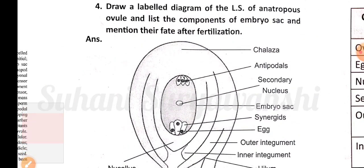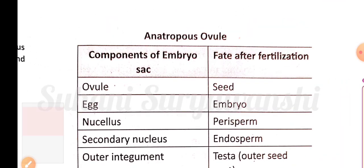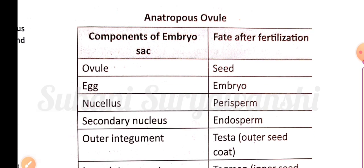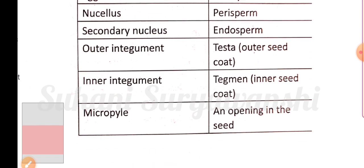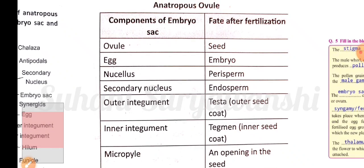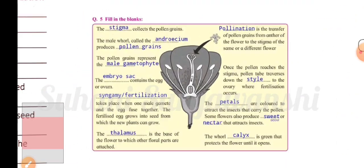Question four: draw a labeled diagram of the lateral side of an anatropous ovule and list the components of the embryo sac, mentioning their fate after fertilization. After fertilization: the ovule becomes a seed, the egg becomes the embryo, the nucellus becomes the perisperm, the secondary nucleus becomes the endosperm, the outer integument becomes the testa, the inner integument becomes the tegmen, and the micropyle becomes an opening in the seed.